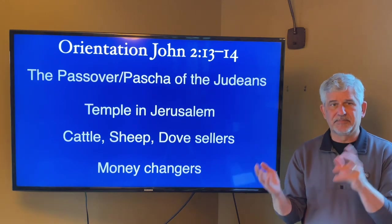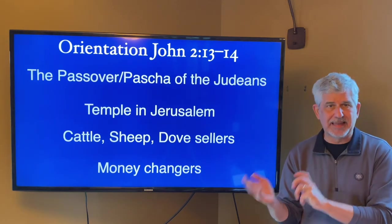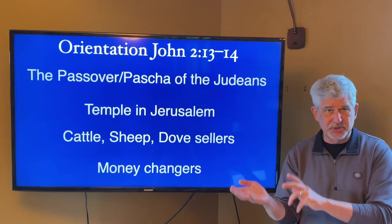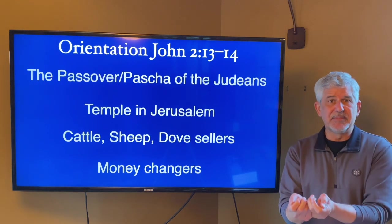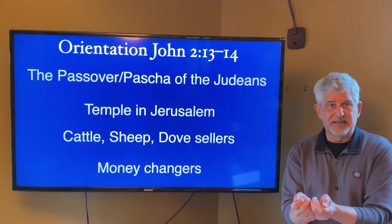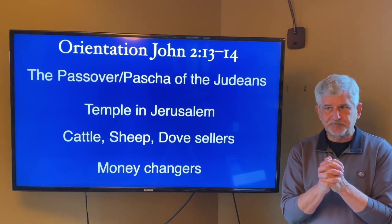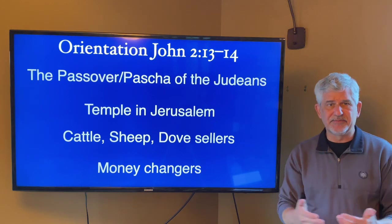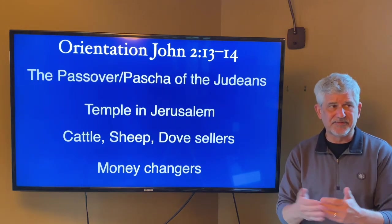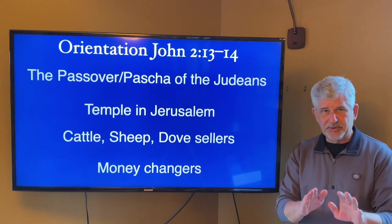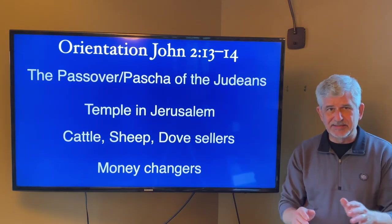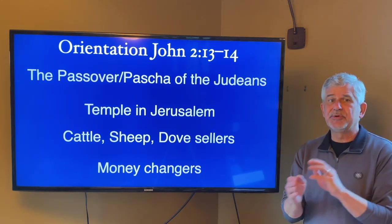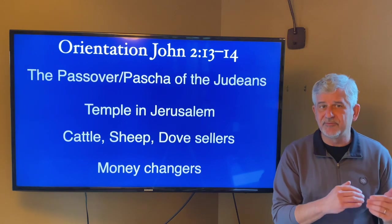You would want to buy cattle, sheep, or a lamb. If you're very poor, at best you'd want to buy a dove or a turtle dove to make your sacrifice. Part of the Passover celebration was doing these acts of both contrition and sacrifice. While we know the story and how it ends, let's make sure that if we find it troubling, we find it troubling for the right reasons.